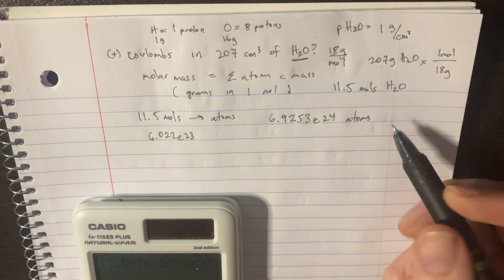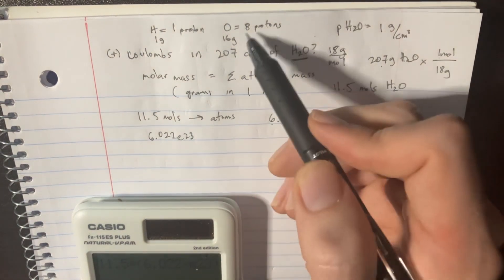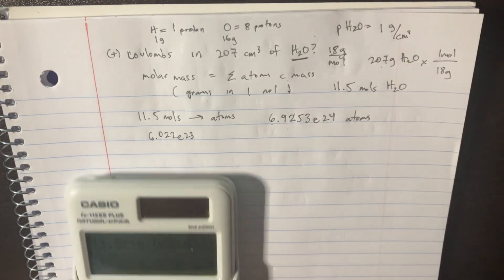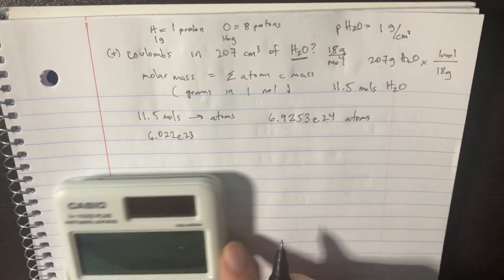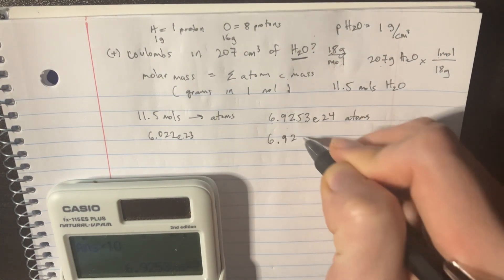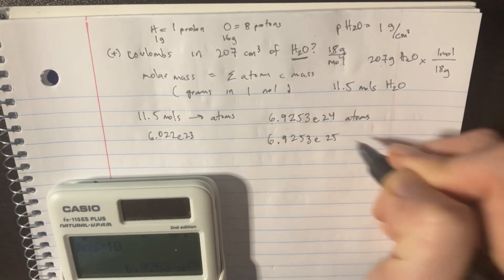Now we need to calculate how many protons there are. We know that there's going to be 10. So we can just multiply that by 10. So now we know how many protons there are. So there's 6.9253 e to the 25 protons.